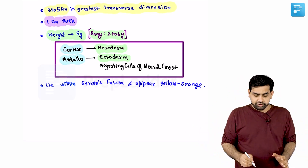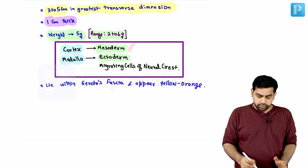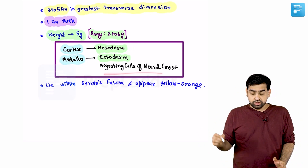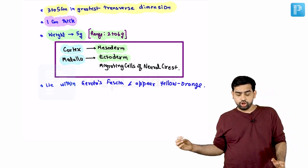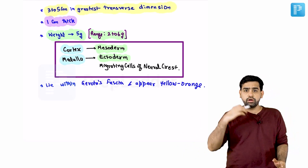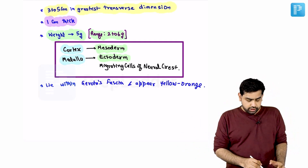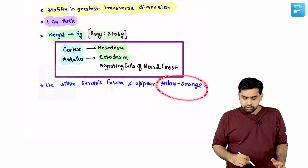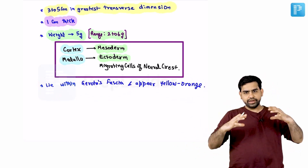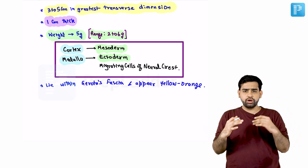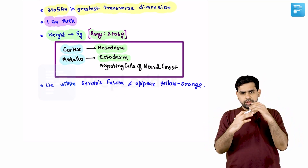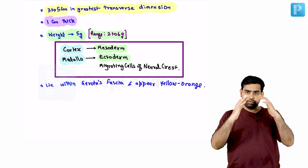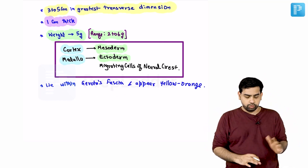The cortex of the adrenal gland is derived from the mesoderm, and the medulla is derived from the ectoderm. For the medulla, there is migration of neural crest cells which leads to the formation of the adrenal medulla. The adrenal gland lies within Gerota's fascia and is basically yellow-orange in color. There is a thin membrane between the adrenal and the kidney, but the adrenal gland is also covered with Gerota's fascia.